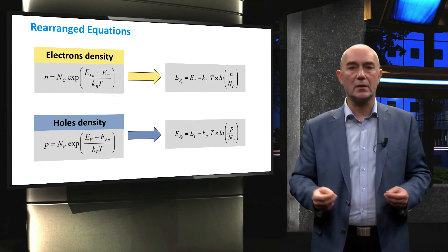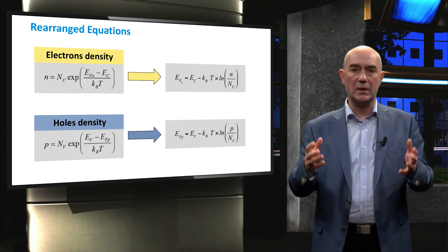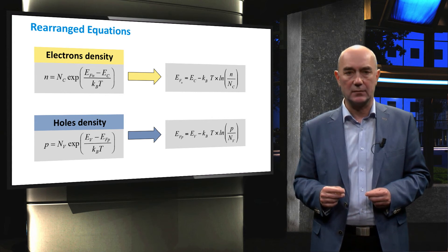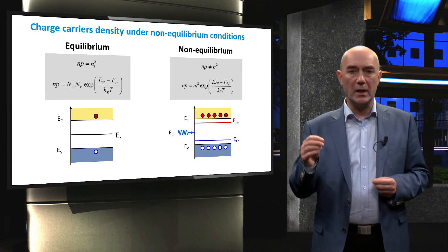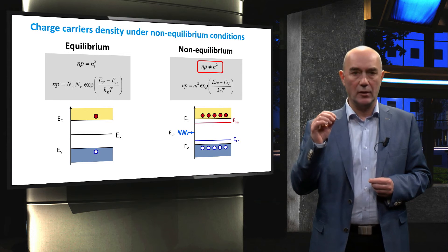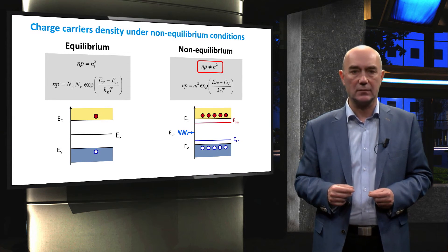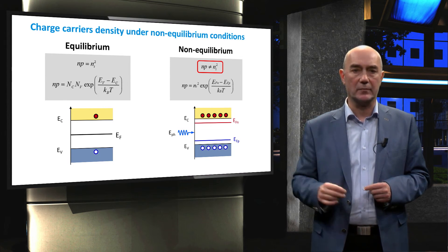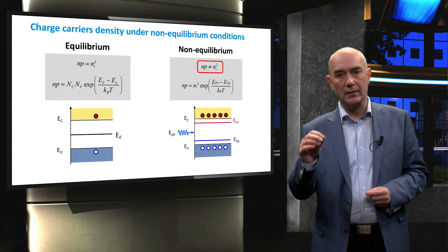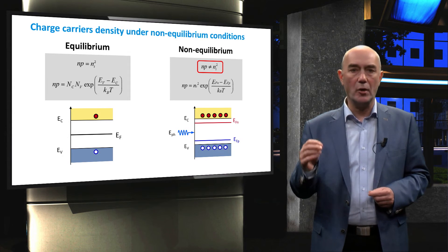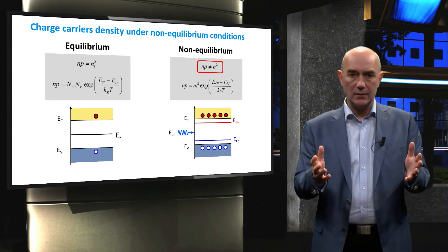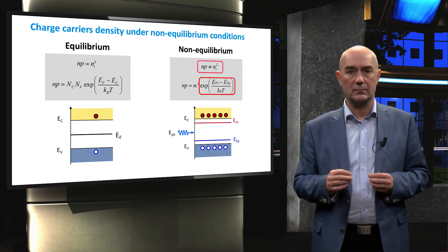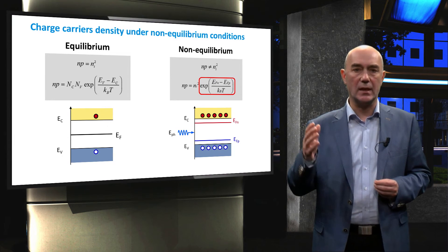I invite you to solve these equations for our example of silicon at room temperature with an injection level of 10¹⁵ charge carriers per cubic centimeter. It is also important to mention that in a non-equilibrium state, the law of mass action is no longer valid — the product of carrier concentrations is no longer equal to Ni squared. Furthermore, the product N×P cannot be determined solely as a function of the band gap energy; we must also account for the difference between the quasi-Fermi level energies, which introduces an exponential term.